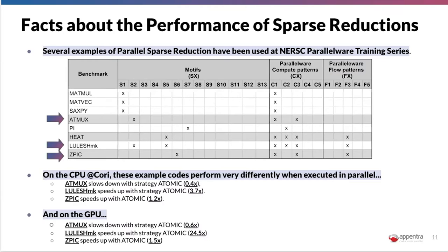On the GPU, the differences are bigger: ATmax still struggles and slows down with atomic. With CPIC you have a bit better performance, 1.5x. And with LulSMK you jump from 4x to 25x. So the question is: what is the difference? If the parallel work pattern is the same, and the properties in the code are the same, what are the properties of the problem or the motif that can justify these differences in performance?